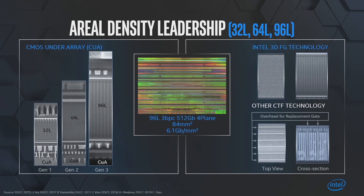What other charge trap flash technologies have to do is make breaks so that you can actually put the replacement gate material in. I've tried to normalize the scales on both, and you can see there is a break in the memory holes — and as a result there is an overhead for the replacement gate, resulting in something close to 8 to 10 percent overhead for cell size. That's significant.